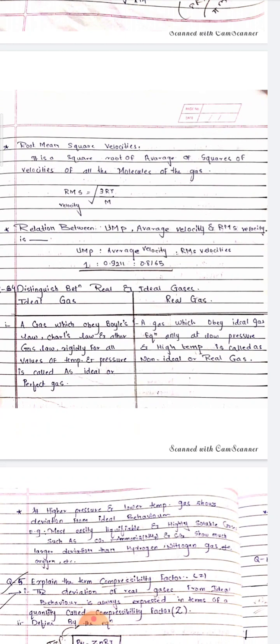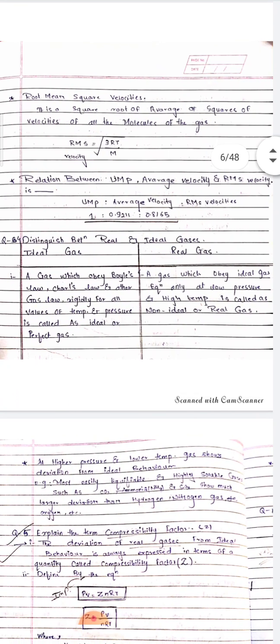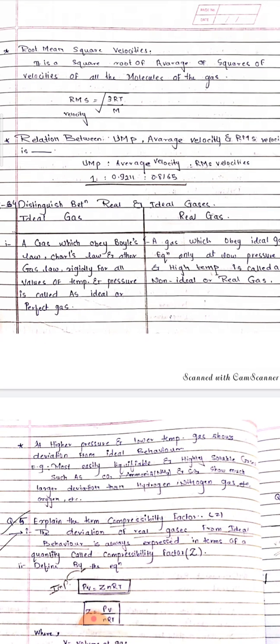What is the basic difference between the real gas and ideal gas? For ideal gas, at all values of temperature and pressure, this gas obeys Boyle's law. But in the case of real gas, the gas can obey the ideal gas equation only at low pressure and high temperature. At high pressure and lower temperature, the gas shows deviation from ideal behavior.